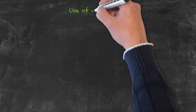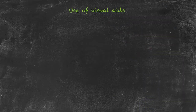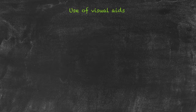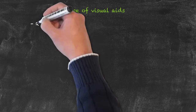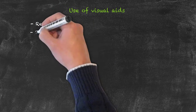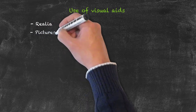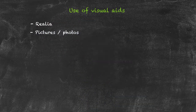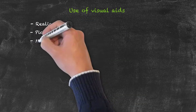The next idea we're going to consider is the use of visual aids. Visual aids can include examples such as real objects, which we call realia, the use of pictures and photographs, and also the use of models.